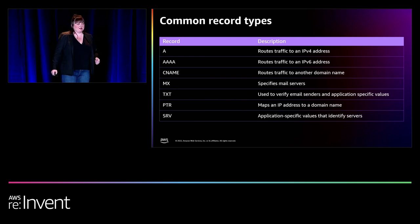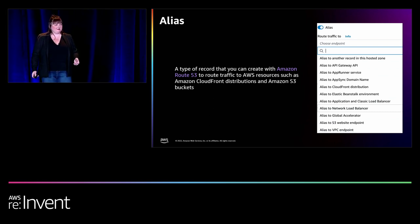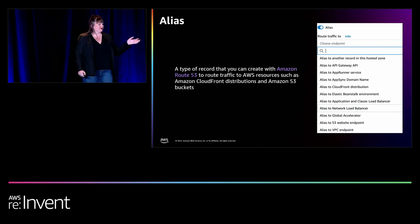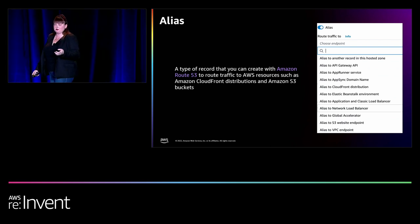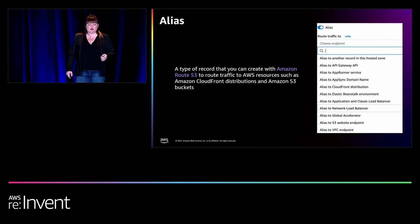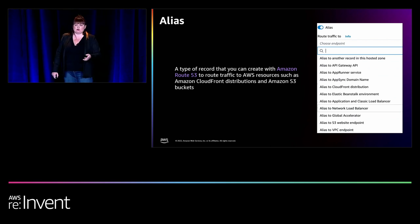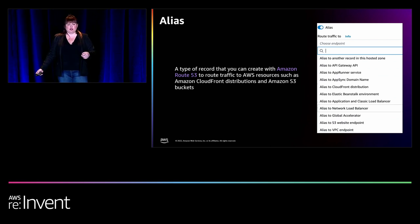The Amazon Route 53 alias record provides a Route 53-specific extension to DNS functionality. You can use alias records to route traffic to selected AWS resources — an S3 bucket website endpoint, Amazon CloudFront distribution, an application load balancer, or even route one record to another in a hosted zone. Queries to alias records are provided at no extra cost, and when you use alias records to route traffic to AWS resources, Route 53 automatically responds to any changes in that resource — for example, if an IP address changes on an elastic load balancer, Route 53 automatically starts responding with the new IP address.